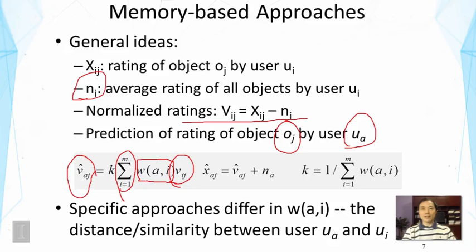You can imagine w(a,i) is just the similarity of user a and user i. What's k here? K is simply a normalizer—it's one over the sum of all the weights of all the users.